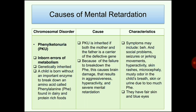Phenylketonuria (PKU) is an inborn error of metabolism that is genetically inherited. A child is born without an important enzyme to break down the amino acid phenylalanine, found in dairy and protein-rich foods. PKU is inherited when both the mother and father are carriers of the defective gene. Failure to break down phenylalanine causes brain damage resulting in aggressiveness, hyperactivity, and severe mental retardation. Characteristics include behavioral and social problems, seizures, jerking movements, hyperactivity, skin rashes, microcephaly, musty odor in breath, skin or urine due to excess phenylalanine, and fair skin with blue eyes.